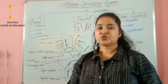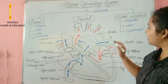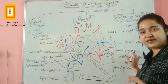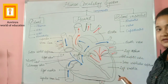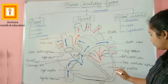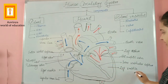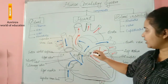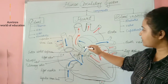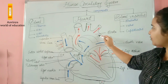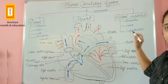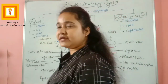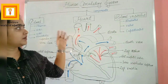Regarding the circulatory pathways: oxygenated blood comes from the lungs to the left atrium, where the left atrium relaxes to fill in the blood. This blood pours down to the left ventricle, where the left ventricle contracts to push the blood through the aortic valve to the aorta, and from the aorta it goes to different body parts.